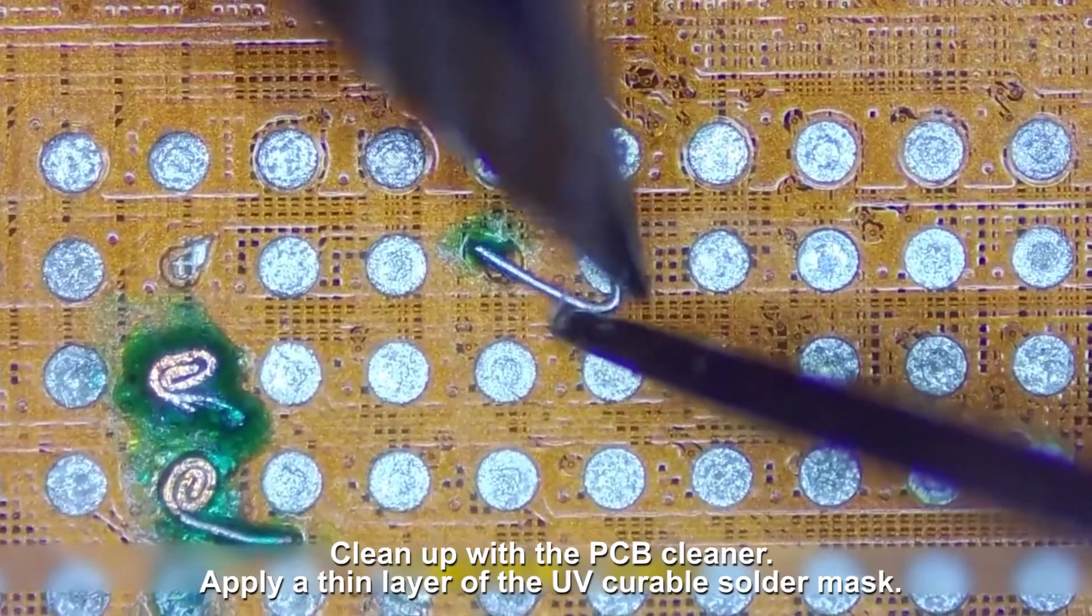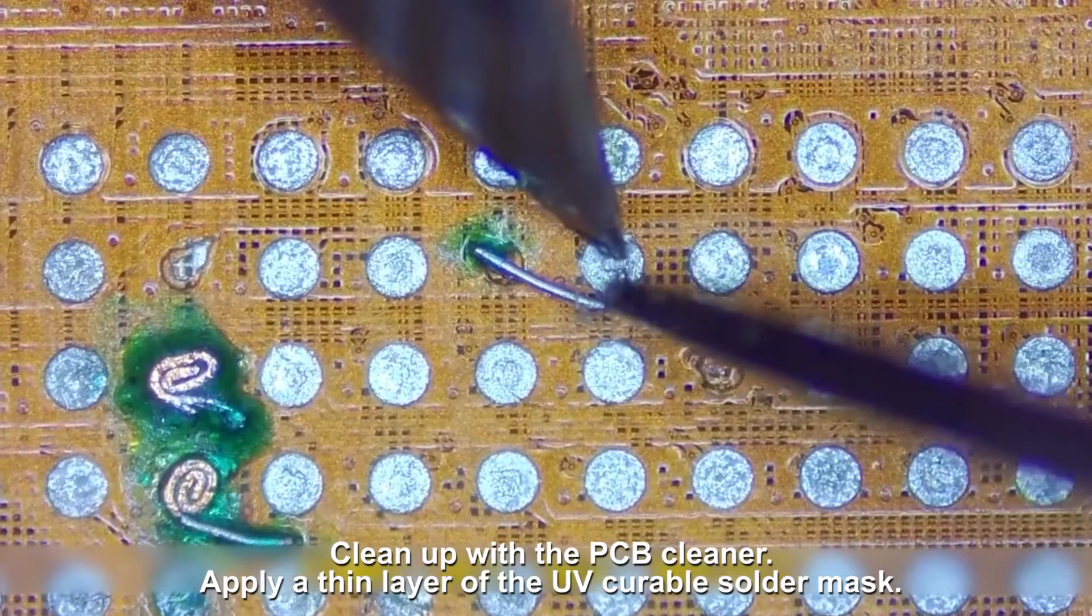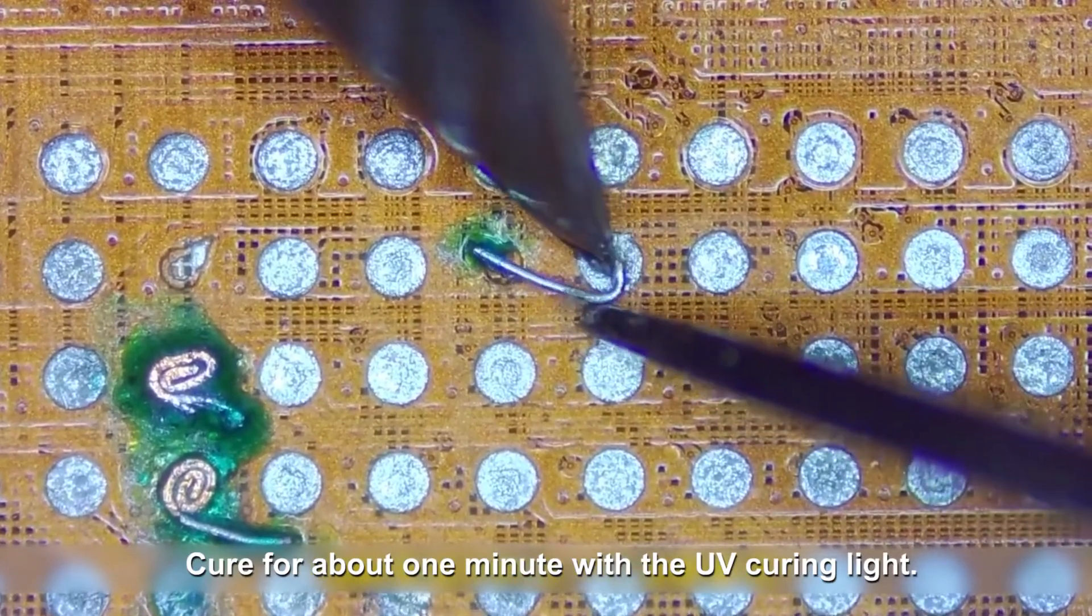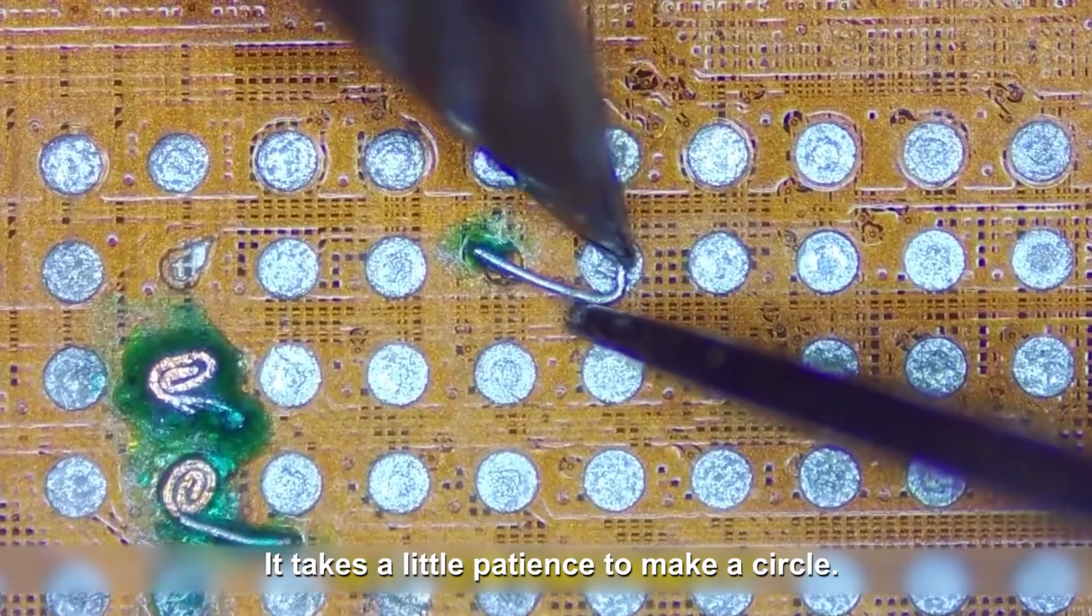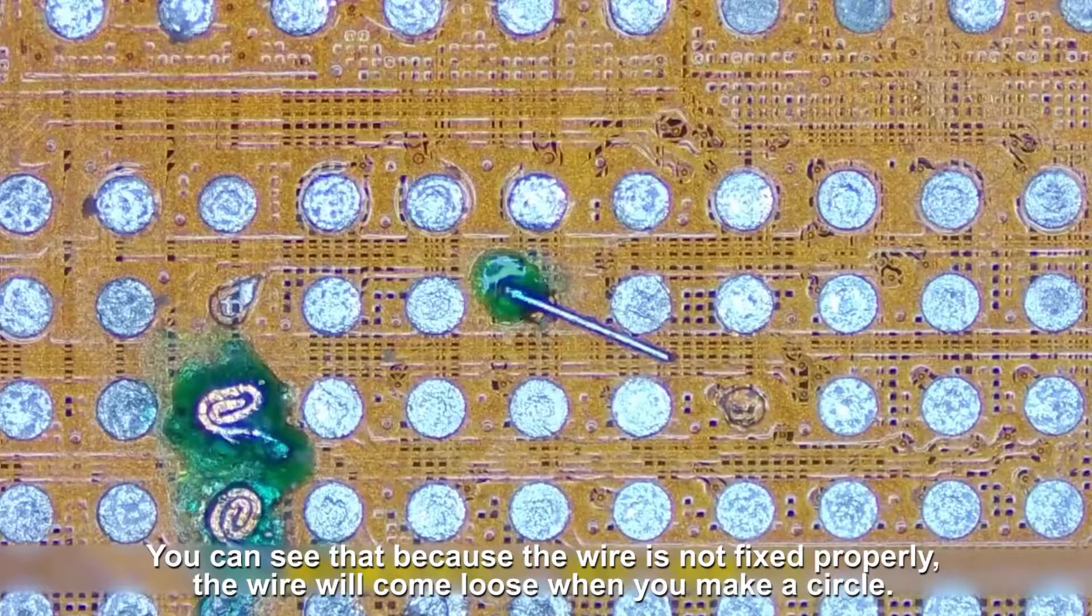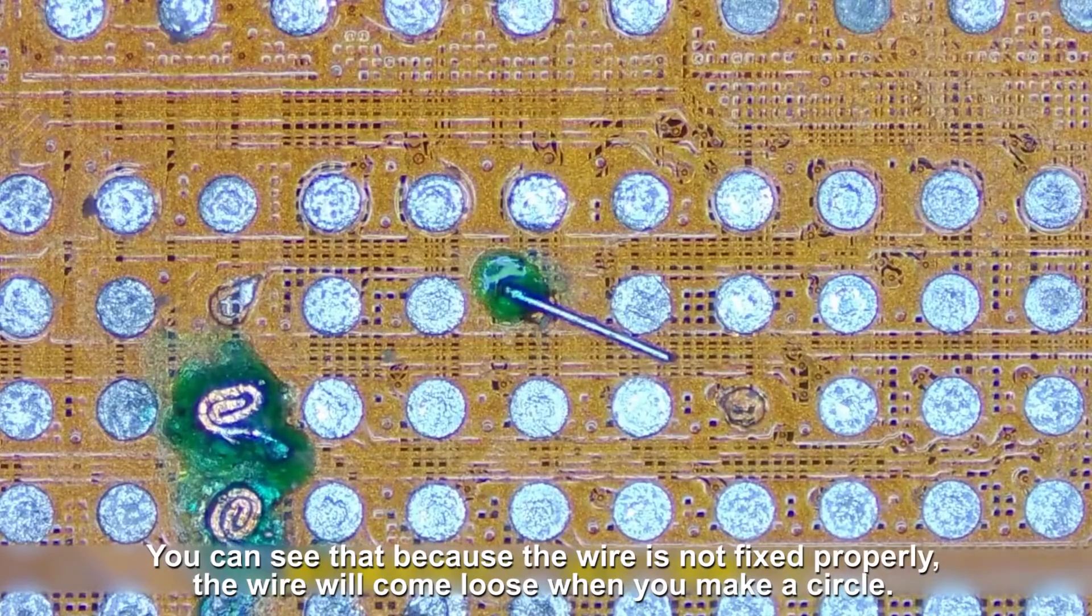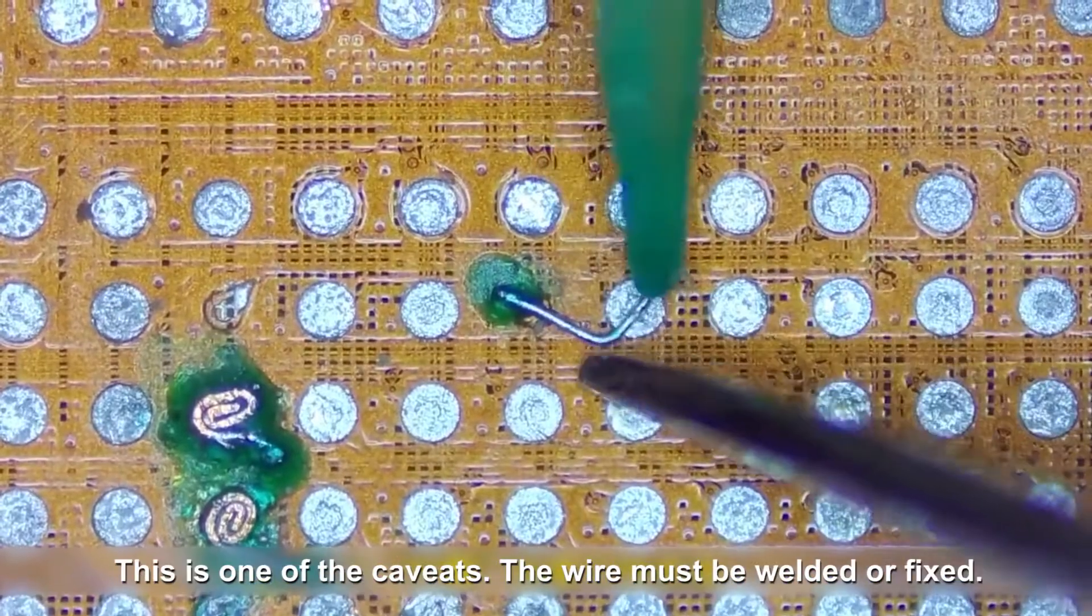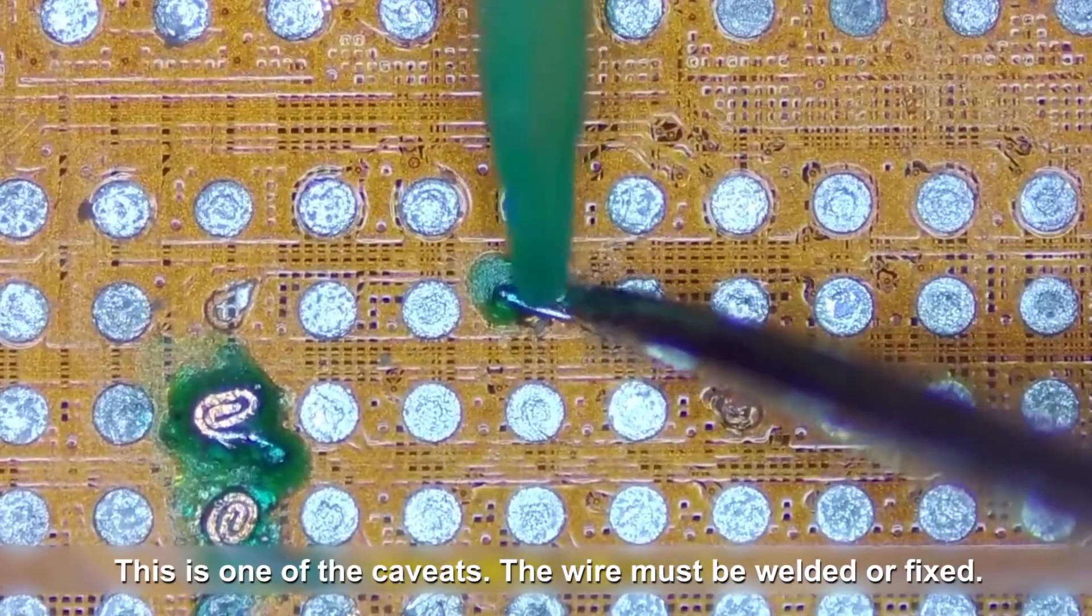Apply a thin layer of the UV curable solder mask. Cure for about one minute with the UV curing light. It takes a little patience to make a circle. You can see that because the wire is not fixed properly, the wire will come loose when you make a circle. This is one of the caveats. The wire must be welded or fixed.